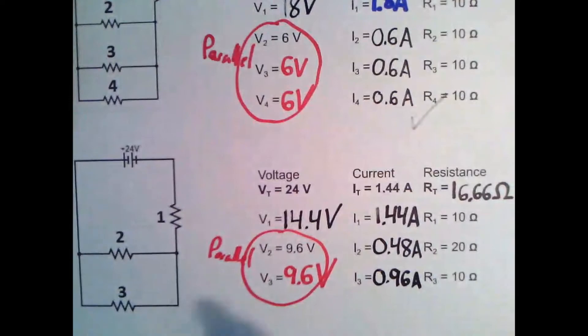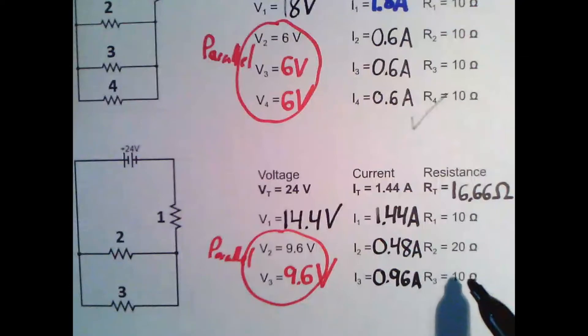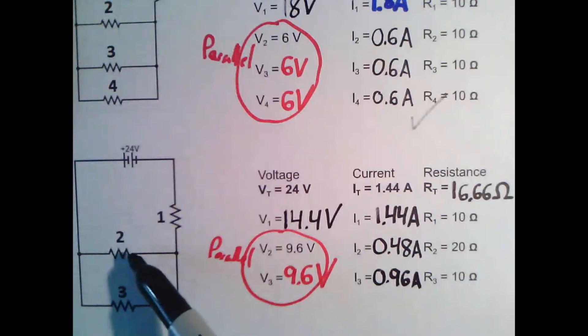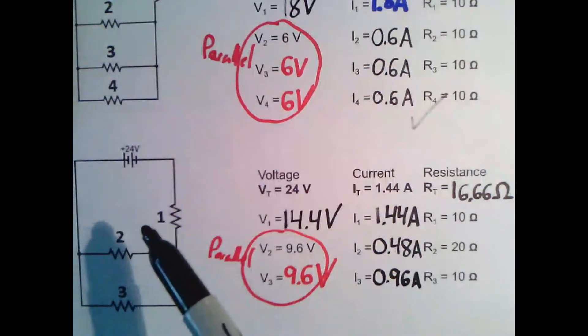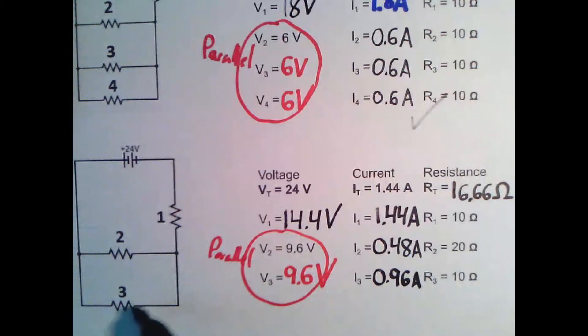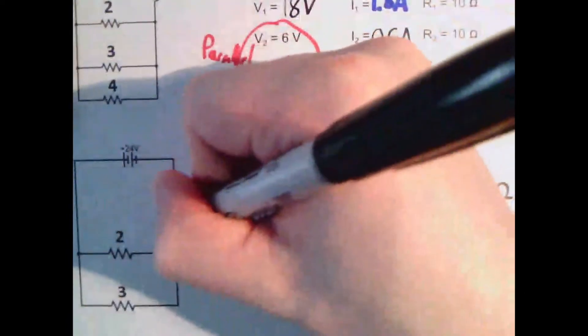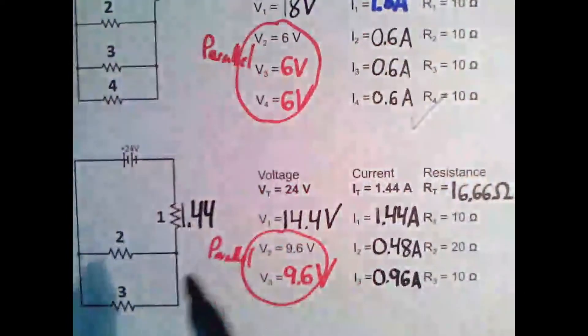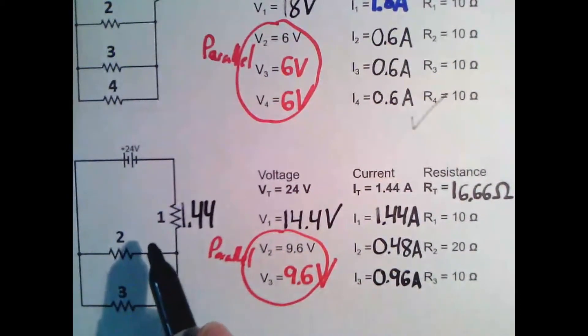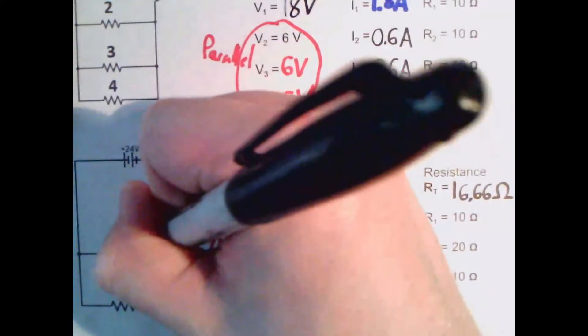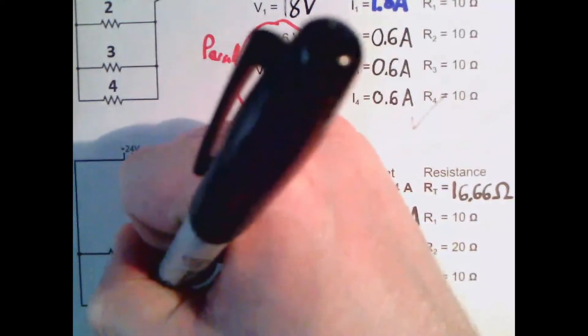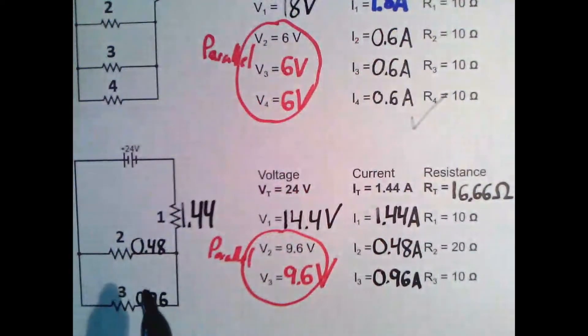And so what you've realized is that electrons take the path of least resistance whenever possible. So this has a resistance of 10 on this path. This has a resistance of 20. So electrons are far more likely to take this path. So when they, you have 1.44 coming through here. So you have 1.44 amps coming through here. This path has more resistance. So yes, electrons will go this way, but more of them are going to go this way because it has half the resistance compared to here.